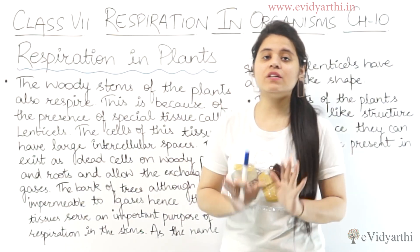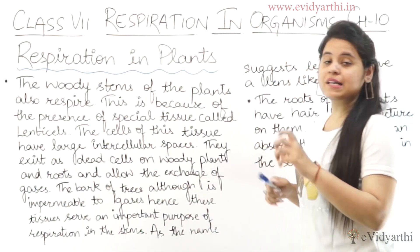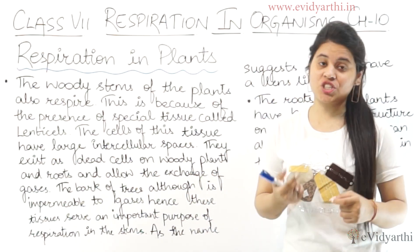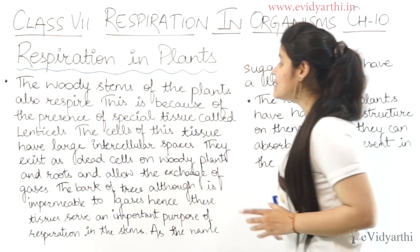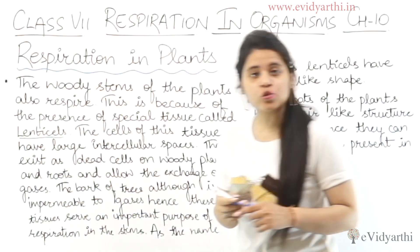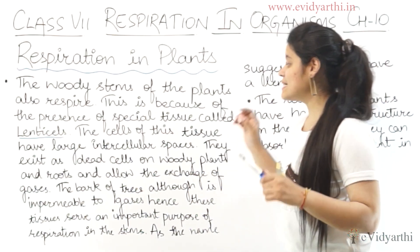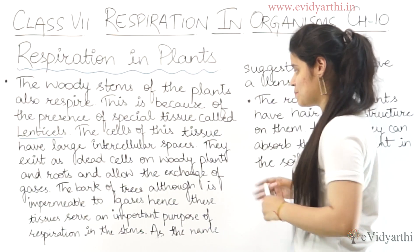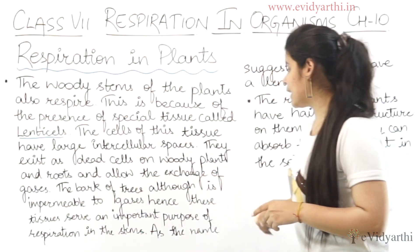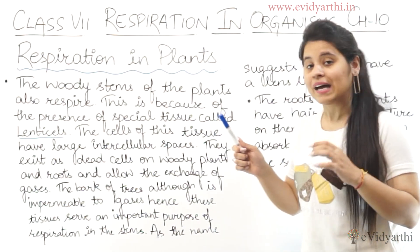Leaves help with respiration, but the wooden stems of plants also respire. This is because of the presence of special tissues called lenticels. Lenticels are tissues found in the stems, and the cells of this tissue have large intercellular spaces. These exist as dead cells on woody plants and roots and allow the exchange of gases.